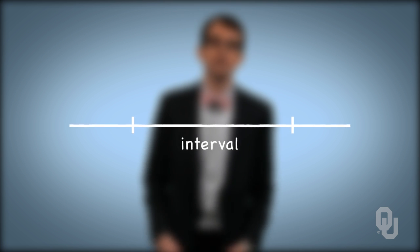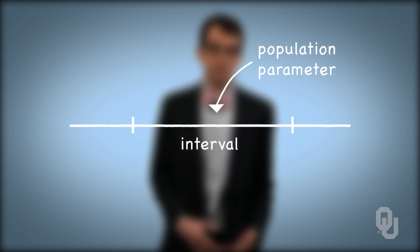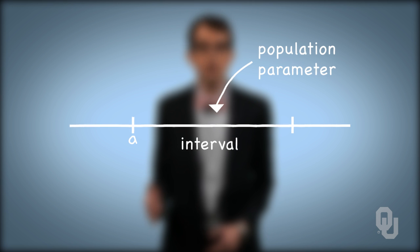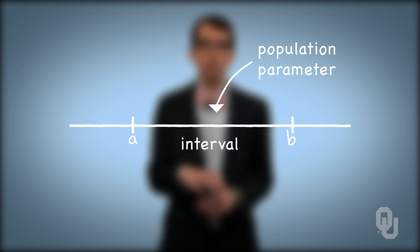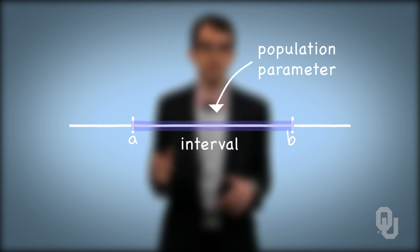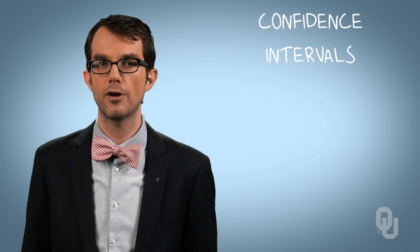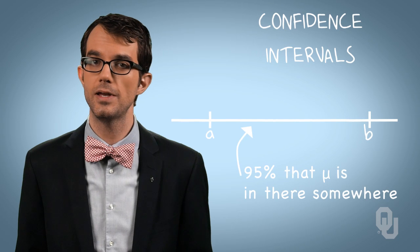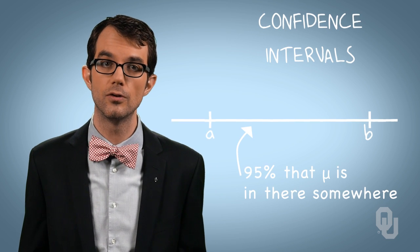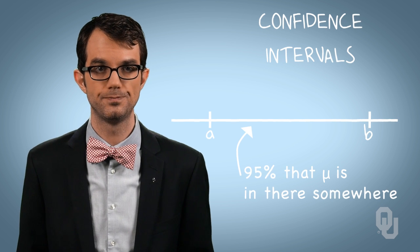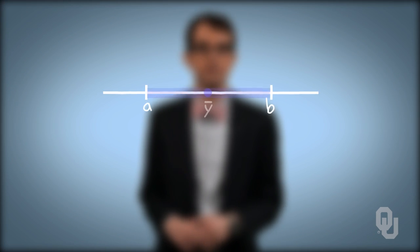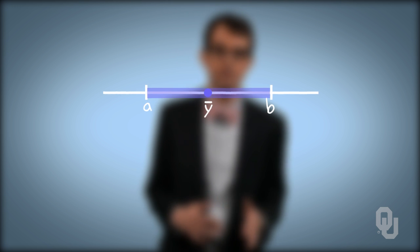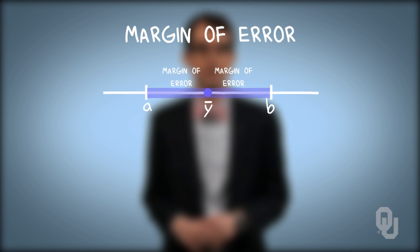We counter this point estimate problem with an interval. We state that this interval is likely to contain the corresponding population parameter. Back to our throughput example — say our lower bound on the interval is a, and the upper bound is b. We believe that the true proportion lies somewhere, though not entirely sure where, inside the interval between a and b. We call these confidence intervals, as we have some amount of confidence that the true population parameter lies on the interval. For example, we say we're 95% confident that the population mean throughput lies between a and b, based on our sample. The wider the interval, the more confidence we have that the population parameter lies in the interval.